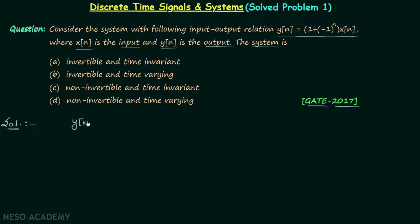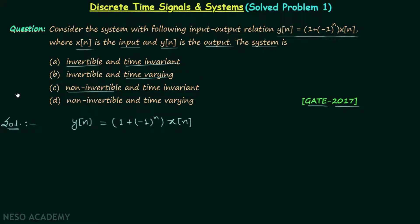We will first write down the given system relationship: output y[n] is equal to (1 + (-1)^n) multiplied by the input signal x[n]. Looking at the four options, it is clear that we need to find whether the system is time invariant or time variant, and also whether it is invertible or non-invertible. We can see that (1 + (-1)^n) is the coefficient in the system relationship.